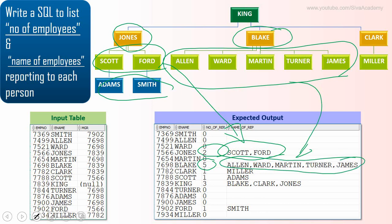We need to print this for all employees. Wherever an employee doesn't have a direct report, we just need to print zero and leave the name as null. For example, Turner, Adams, and James don't have any reporters.